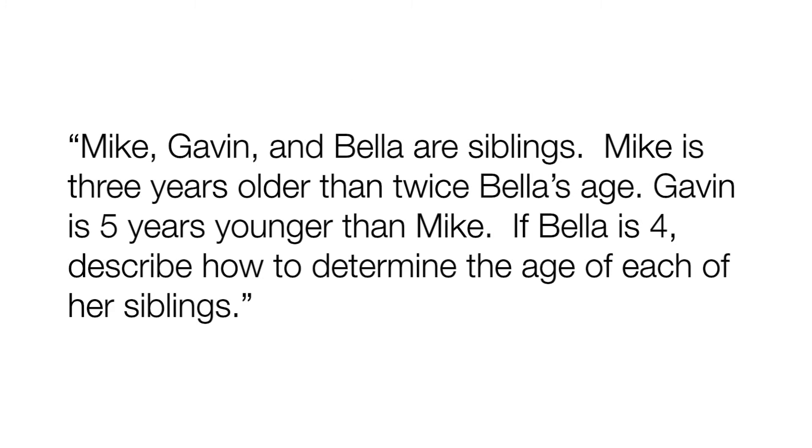Mike, Gavin, and Bella are siblings. Mike is three years older than twice Bella's age. Gavin is five years younger than Mike. If Bella is four, determine the age of her siblings.